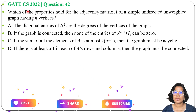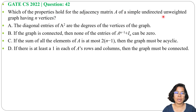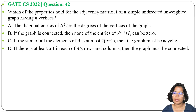Let's solve a previous question of graph theory. This question was asked in GATE year 2022, Question number 42: Which of the properties hold for the adjacency matrix A of a simple, undirected, unweighted graph having n vertices? Four options are given. Let me analyze them one by one.